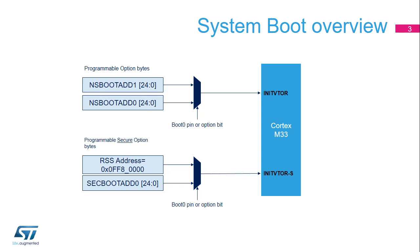Unlike the Cortex M4, which always boots at address 0, the Cortex M33 samples inputs that determine the boot address. When TrustZone is disabled, init VTOR inputs are used, which receives an address programmed in Option Bytes.